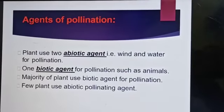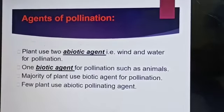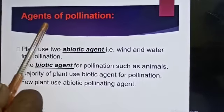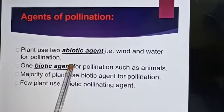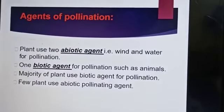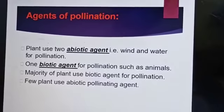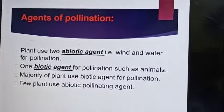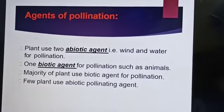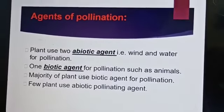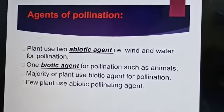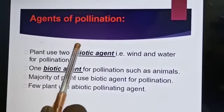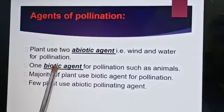Agents of pollination — agents means vectors. Pollination is the most important process where pollen grains reach the stigma. The medium can be air, water, insects, or other methods. On the basis of that, there are two types of agents: abiotic agents and biotic agents.